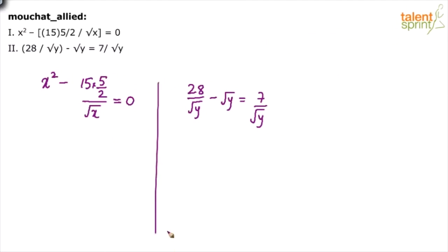Okay, I'm not too sure about the first equation here because x squared minus 15, 5 by 2, it should be 15 into 5 by 2, I think that's what you have said, right, you have put a bracket there. So simplify this, take root x as the LCM, so x power 2 into root x minus 15, 5 by 2 can be taken as 75 by 2 equals to 0.